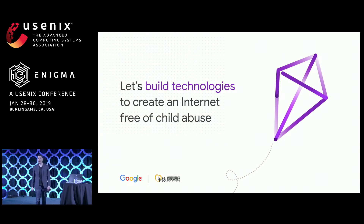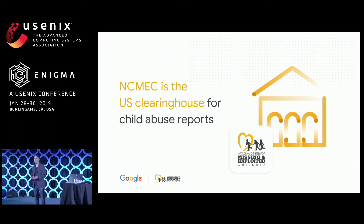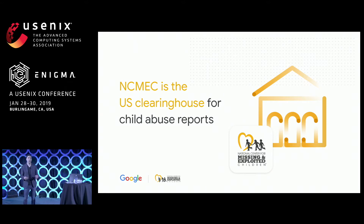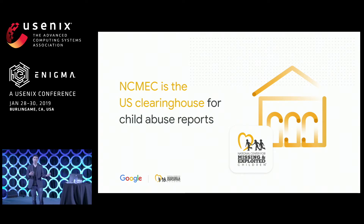Before I get to that, let me take a moment to tell you about who NCMEC is, because some of you might not be familiar with it. NCMEC stands for the National Center for Missing and Exploited Children. It is the U.S. NGO in charge of processing any type of child abuse report, whether it's trafficking, sexual abuse, or even missing kids. If you have ever received an Amber Alert, the Amber Alert is issued by NCMEC.